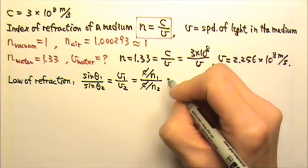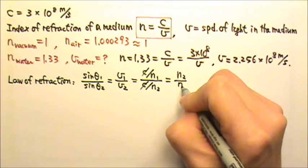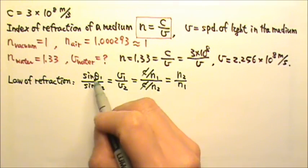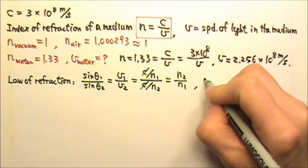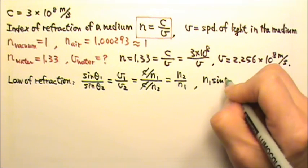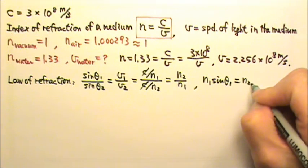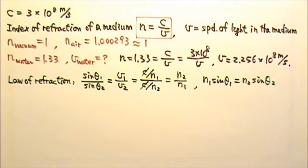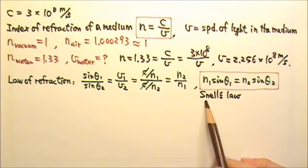And then we can cancel the C, and we get N2 over N1. And then if we cross multiply, we get N1 sin theta 1 equals to N2 times sin theta 2. And this is called the Snell's law.